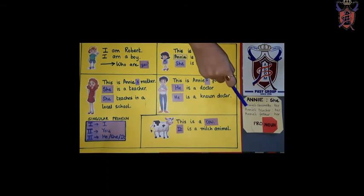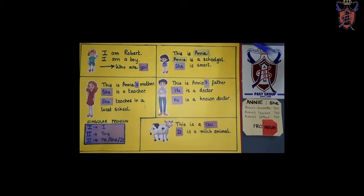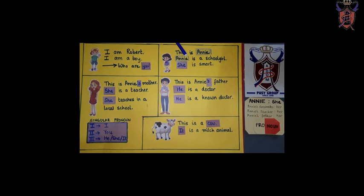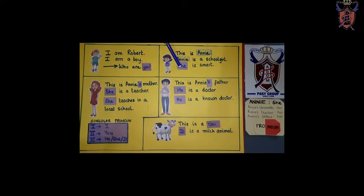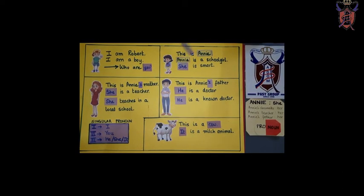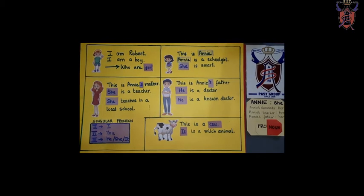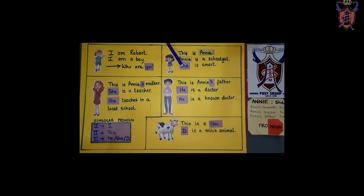Whenever we use a word instead of a noun, like Annie ke jaga pe, hum ne yahan par kya use kiya hai? She. So, instead of the noun, we have used she. So, that is why she is a pronoun.